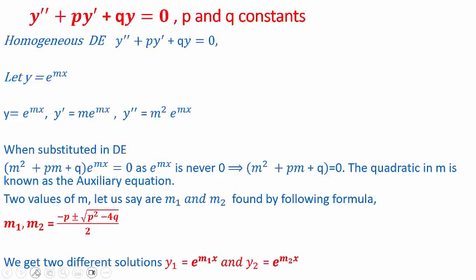If we are given a second order homogeneous linear differential equation y'' + py' + qy = 0, where p and q are some constants, and we have to find the solution, we will start by assuming y = e^(mx). The reason being, every time we differentiate y, we will be getting the term e^(mx).